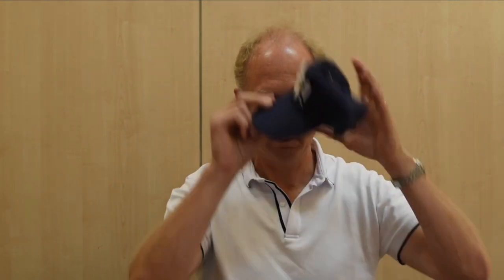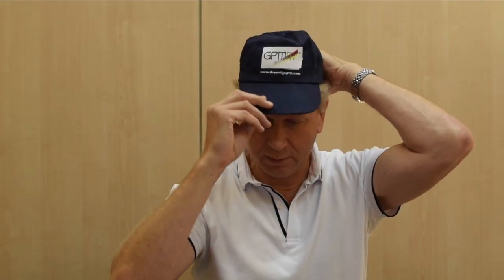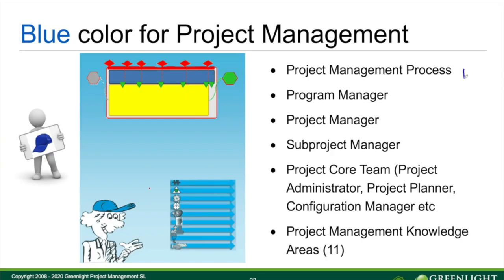Then we have the blue color — blue color for project management. With the blue color, we represent the project management process, the program manager, the project manager, sub-project manager, which is sometimes a little bit of a blue-yellow mixture, but typically blue. We also could have a project core team with project administrator, project planner, configuration manager, etc., that is supporting the project manager.